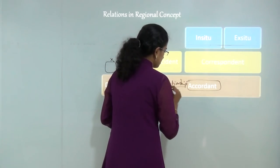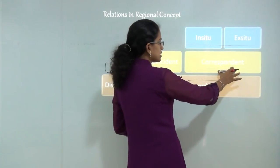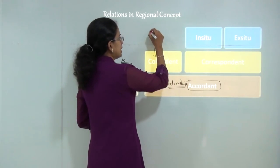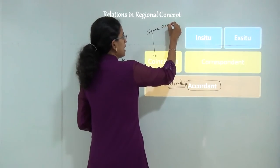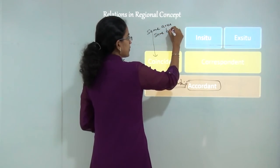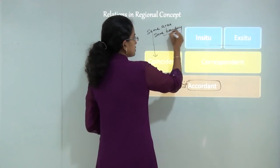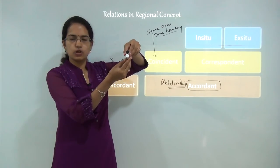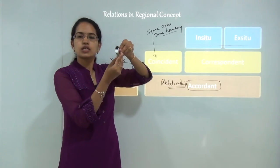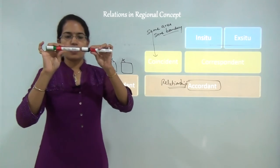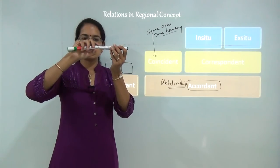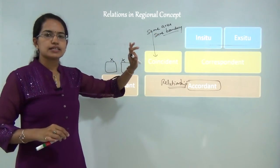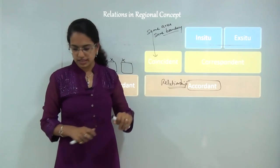This accordant relationship can again be of two types: coincident and correspondent. When I say coincident, the region will have the same area as well as the same boundary. That means one region is totally overlapping onto the other - they are coincident, or their boundaries match exactly. So they have the same area and the same boundary and are coincident in nature.